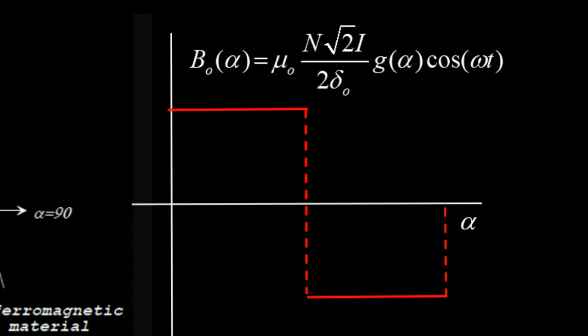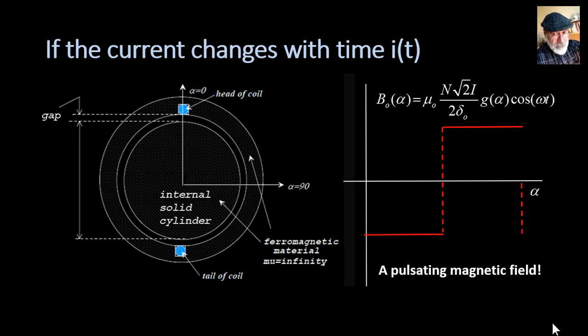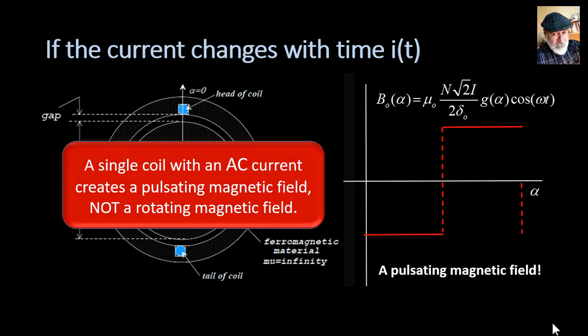If that current is a function of time, let's say that current is root 2i cosine omega t, what is happening with the magnetic flux density in the air gap? It still has that square-ish look along the air gap, but now its amplitude is changing sinusoidally with time. We have a magnetic field that is not going anywhere, but it's pulsating.